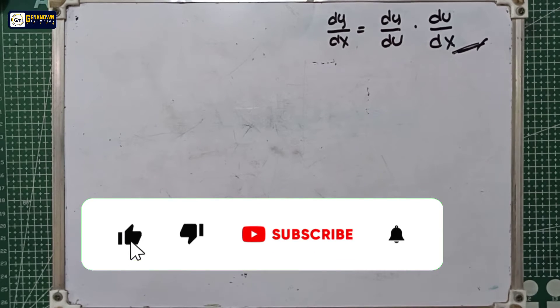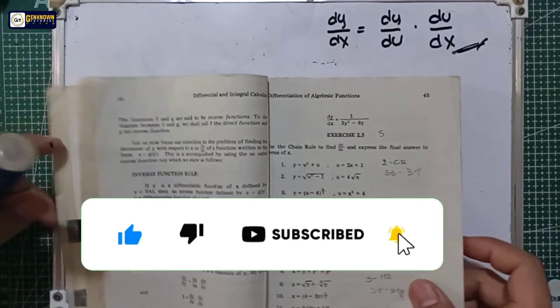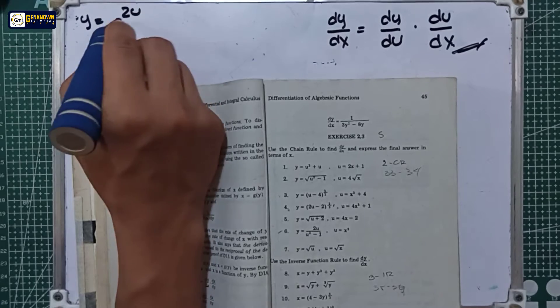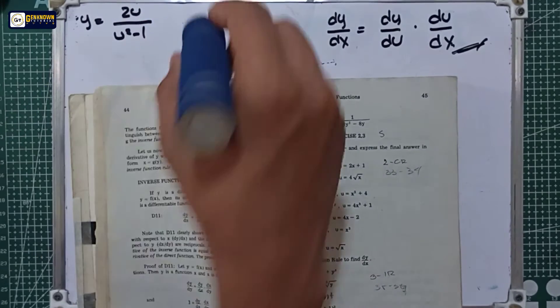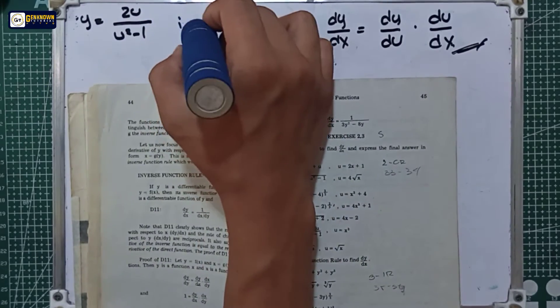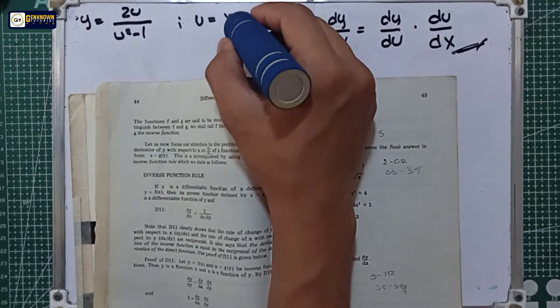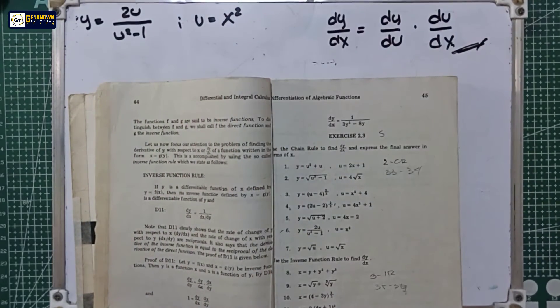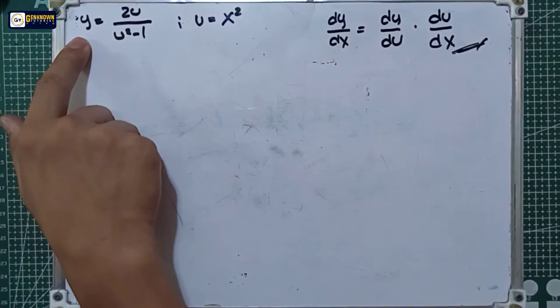Welcome back again to general tutorial. We are now on problem number six of the chain rule. We have y equal to 2u over u squared minus one, and for the u equation we have u equal to x to the second power.